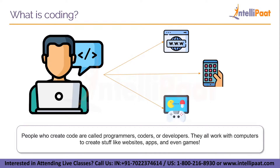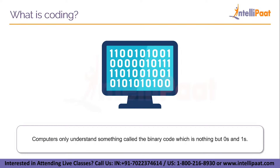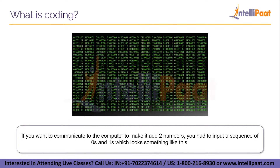You'll learn what code is, what it's for, and how to start learning coding yourself. Computers only understand something called binary code, which is nothing but zeros and ones — also called machine code. We can communicate with it by inputting a combination of the right sequence of zeros and ones. If you want to communicate with a computer to make it add two numbers, you would have to input a sequence of zeros and ones. It is obviously very hard to understand and remember this for humans. Luckily, over time, programmers have made the task easy for us by creating programming languages like C, Java, Python and many others which resemble simple English.